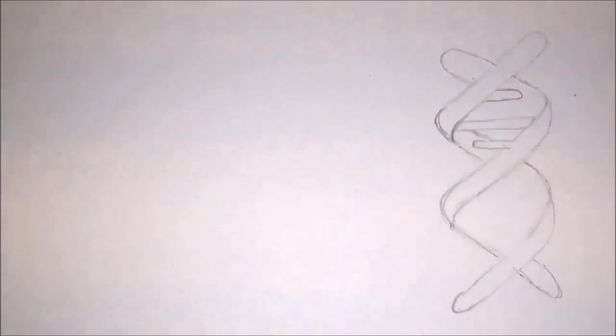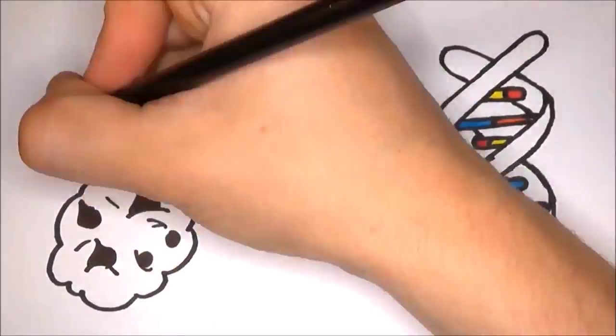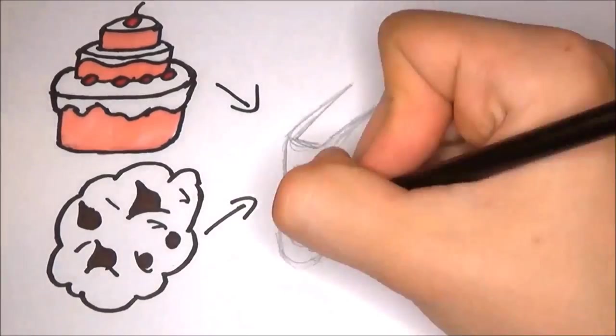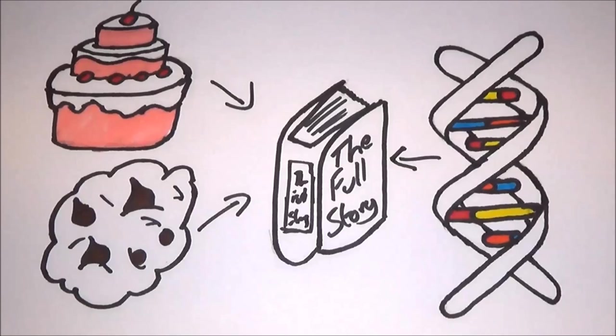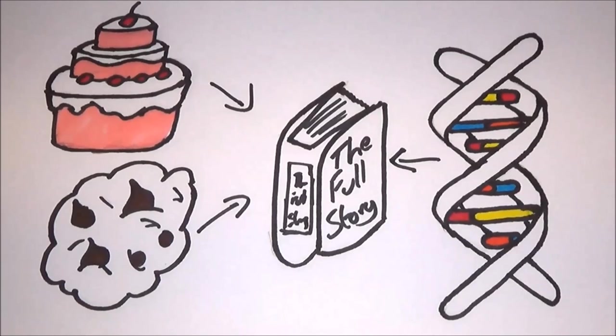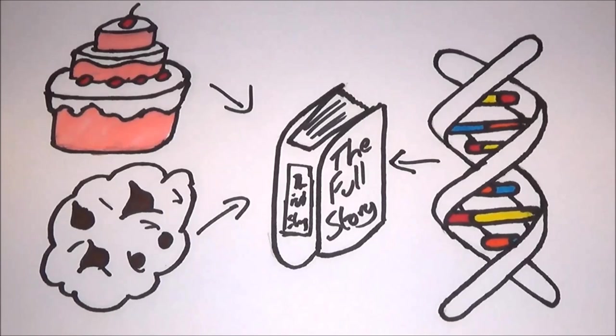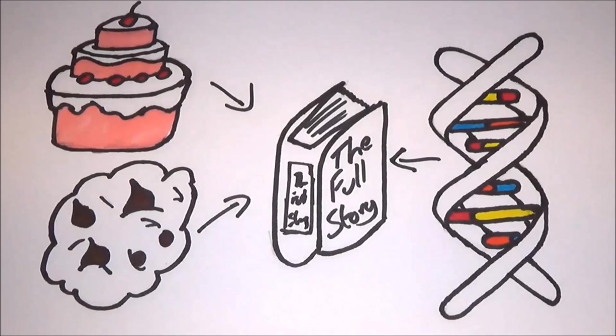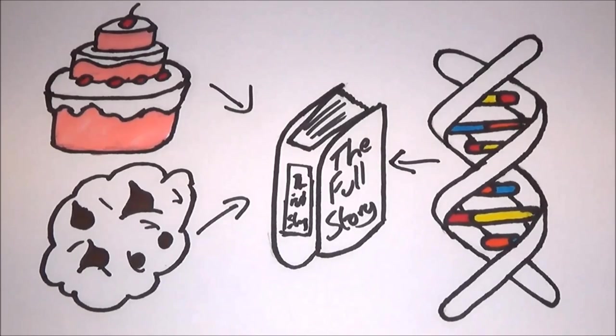As well as internal factors like what kind of cell the DNA is in, environmental factors such as diet also have an influence. This area of research, known as epigenetics, has had a huge impact on our understanding of genetics. It shows that what's coded in our DNA is not the full story. Our lifestyle, and even that of our parents and grandparents, can influence which genes are turned on and so affect our health and how we age.